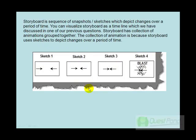Before we move ahead, let's get acquainted with one more vocabulary: storyboard. A storyboard is a sequence or collection of snapshots and sketches which are depicted over a period of time. As they are depicted over time, you get an illusion of animation. For example, I have sketch 1, sketch 2, sketch 3, and sketch 4. If I move these sketches over a period of time, you get an illusion of animation. You can think about storyboard as a collection of animations grouped together.